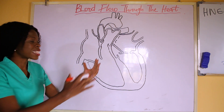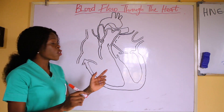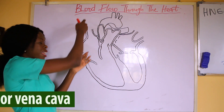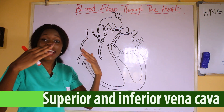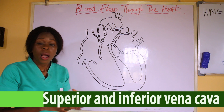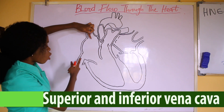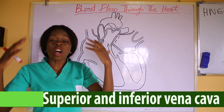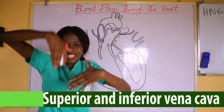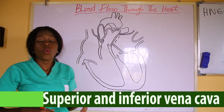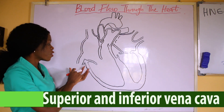We are going to start from the right side of the heart when it comes to blood flow. We have the superior vena cava and the inferior vena cava. Deoxygenated blood — that is blood with high carbon dioxide and low oxygen — enters into the heart through the superior vena cava and the inferior vena cava. Deoxygenated blood from the head and the upper part of the body enters through the superior vena cava, while deoxygenated blood from the lower extremities enters through the inferior vena cava.